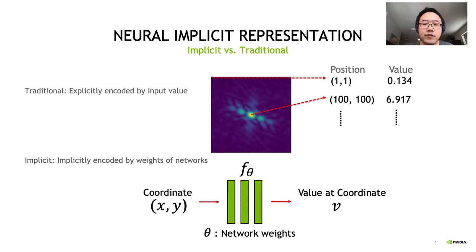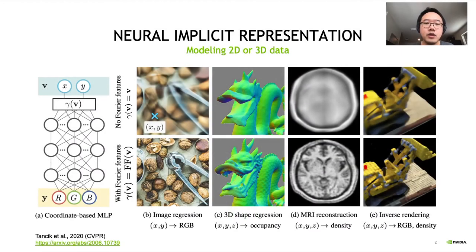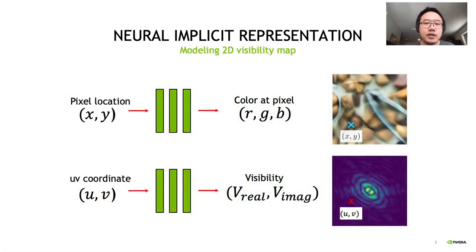Given a pair of real value 2D coordinates, the function maps the coordinates into the corresponding value. The neural implicit function has been successfully applied to model 2D images, as well as various kinds of 3D data, such as 3D shape, MRI reconstruction, and modeling the radiance fields for inverse rendering.